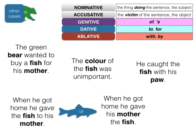The green bear 'wanted' — he's the nominative because he's doing something. He wanted to buy a fish — the fish is the victim of the buying, so fish is accusative. 'For his mother' — 'for' is dative. 'The color of the fish was unimportant' — color is the subject, so color is nominative; 'of the fish' makes fish genitive. 'He caught the fish with his paw' — fish is accusative, and 'with his paw' means paw is ablative.